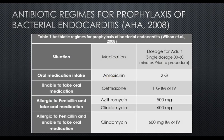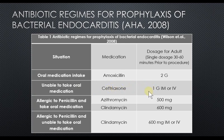To avoid infective endocarditis, antibiotic prophylaxis can be given. Amoxicillin 2 grams orally is administered 30 to 60 minutes before the procedure. If the patient cannot take oral medication, ceftriaxone 1 gram intramuscularly or intravenously can be used. If the patient is allergic to penicillin but can take oral medication, azithromycin or clindamycin is used. If allergic to penicillin and unable to take oral medication, clindamycin injection is given.